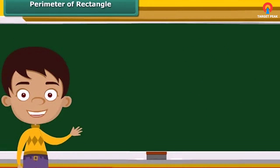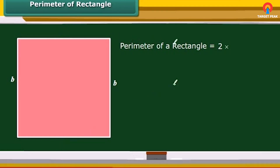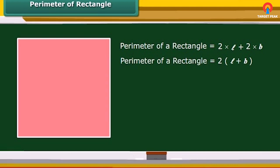Let us now calculate the perimeter of a rectangle. A rectangle is a four-sided geometric figure whose opposite sides are equal. Therefore, the perimeter of a rectangle is twice its length plus twice its breadth. We can rearrange this and say that the perimeter of a rectangle is twice the sum of its length and breadth.